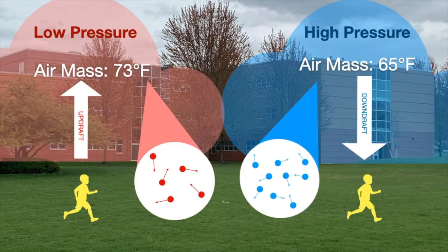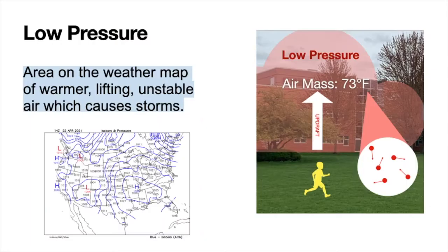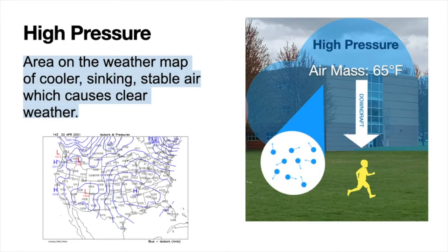As you can see, altitude influences air pressure, but the temperature of the air mass — and eventually the humidity — also influences air pressure. Low pressure is an area on the weather map of warmer, lifting, and unstable air, which is associated with storms. In contrast, high pressure is an area with colder, sinking, stable air that is associated with clear, pleasant weather.